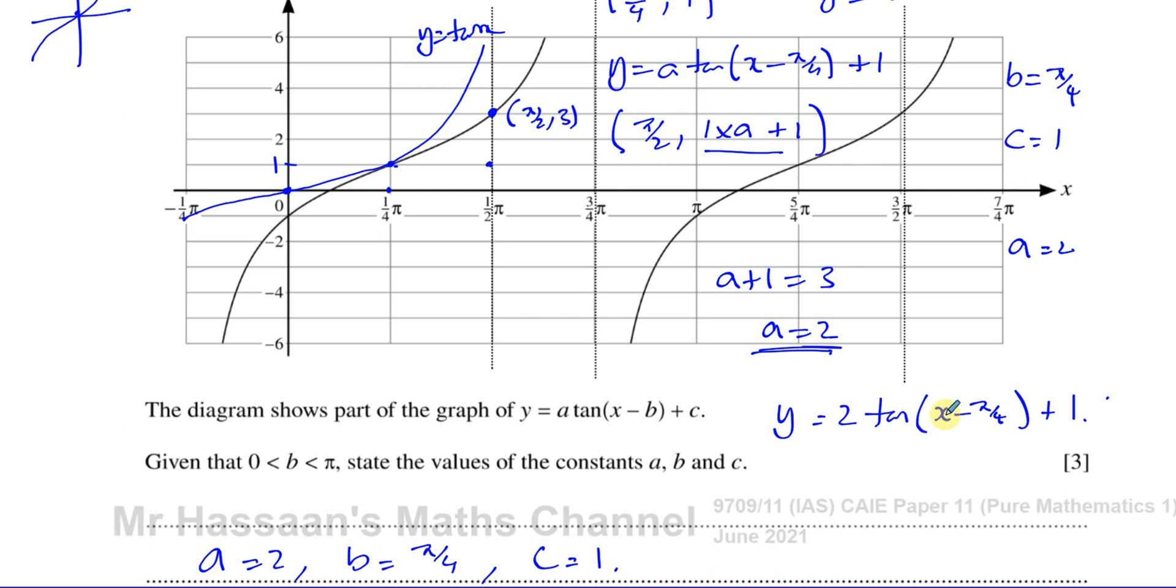So if we put, for example, x equals pi over 4, you'll have tan of 0, which is 0, 0 times 2, which is 0 plus 1, which is 1. And you can see pi over 4, 1 is a point on the curve. Or we could choose pi over 2. We have 2 times tan of pi over 2 minus pi, that's going to be tan of pi over 4, which is 1. So 2 times 1 plus 1, it's going to give you 3. That's exactly where we are.